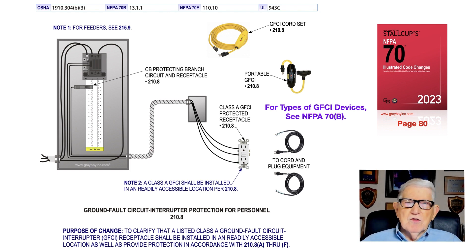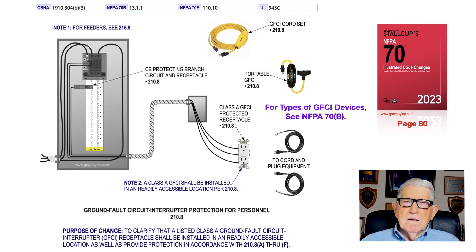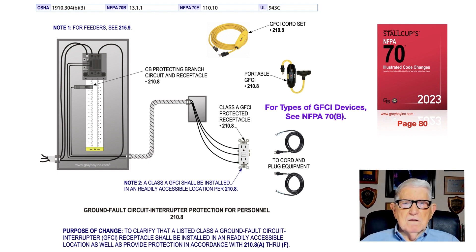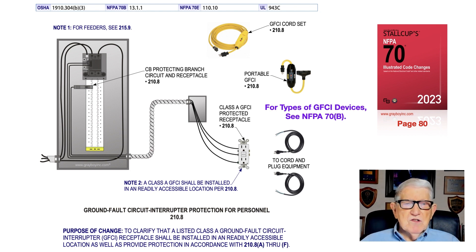As illustrated, you could have a circuit breaker that provides GFCI protection, AFCI protection, short circuit, ground fault, and overload protection all on one breaker. Or you could have a cord set with a GFCI protective device installed within it, a portable type GFCI, or a GFCI receptacle itself.